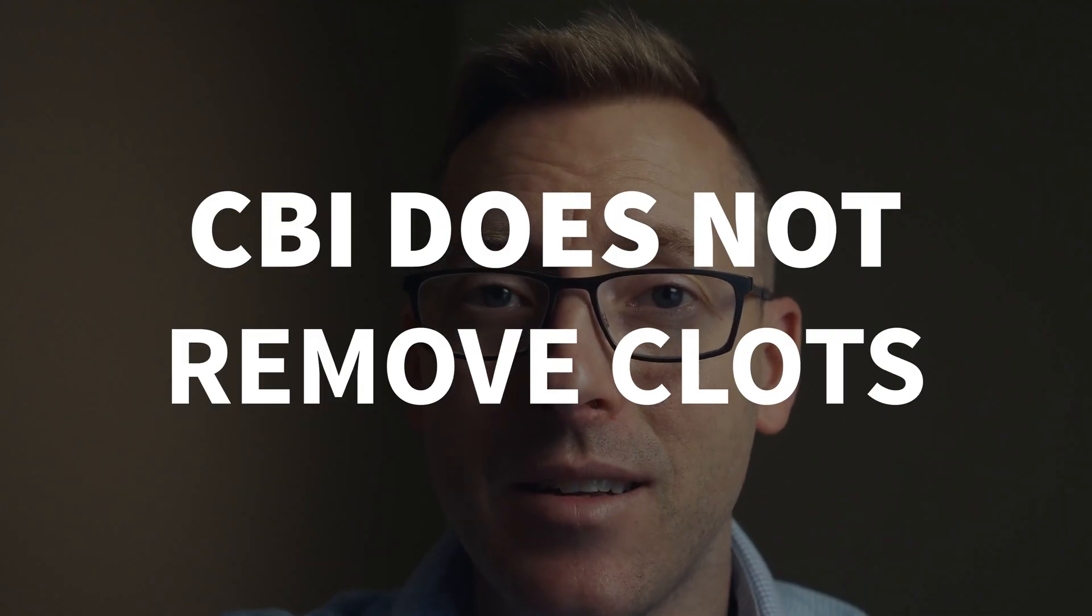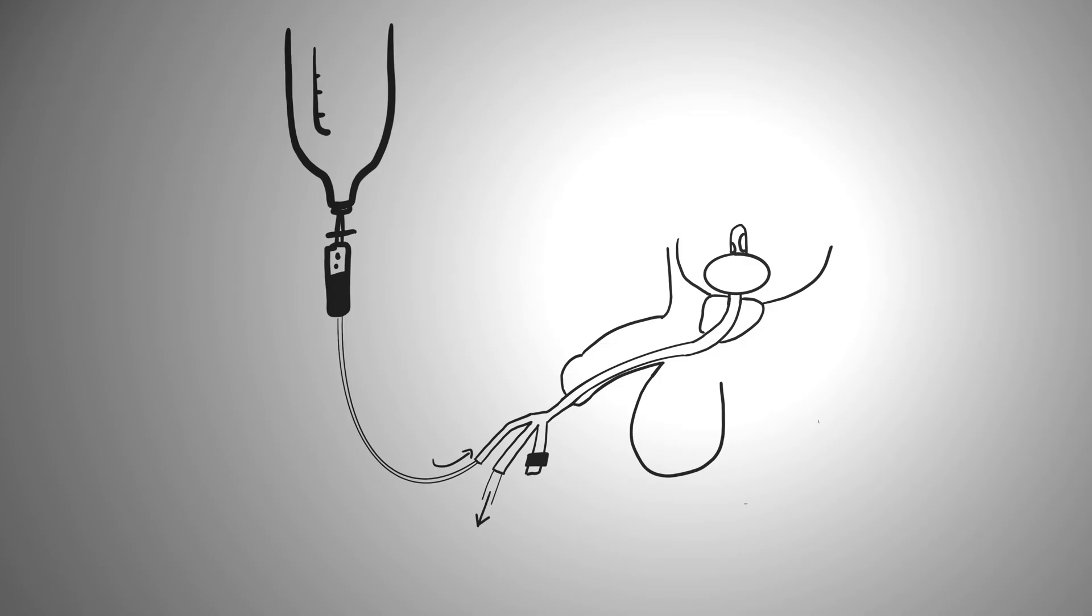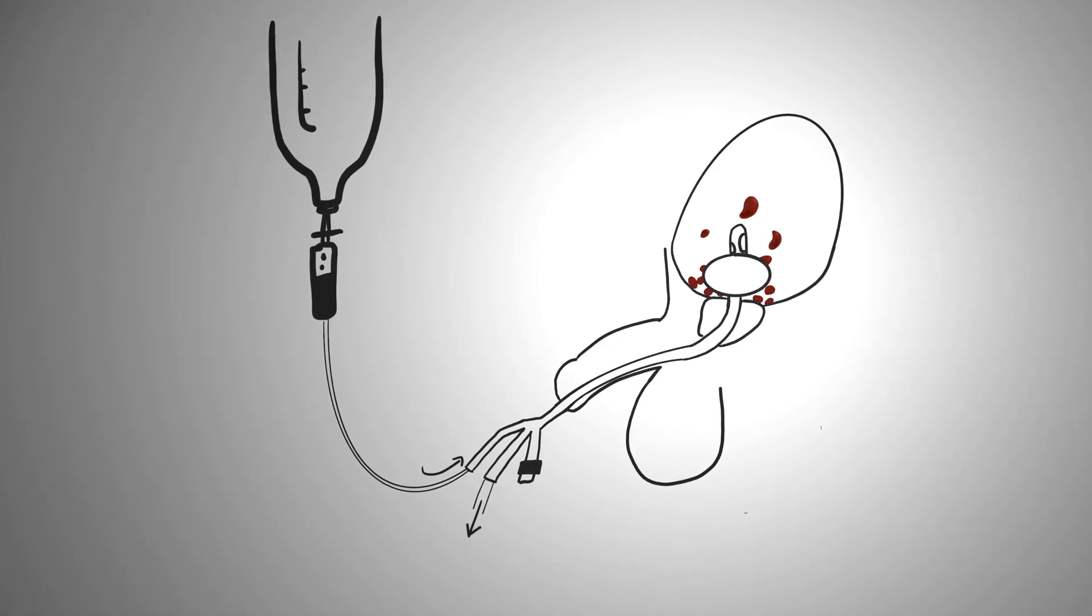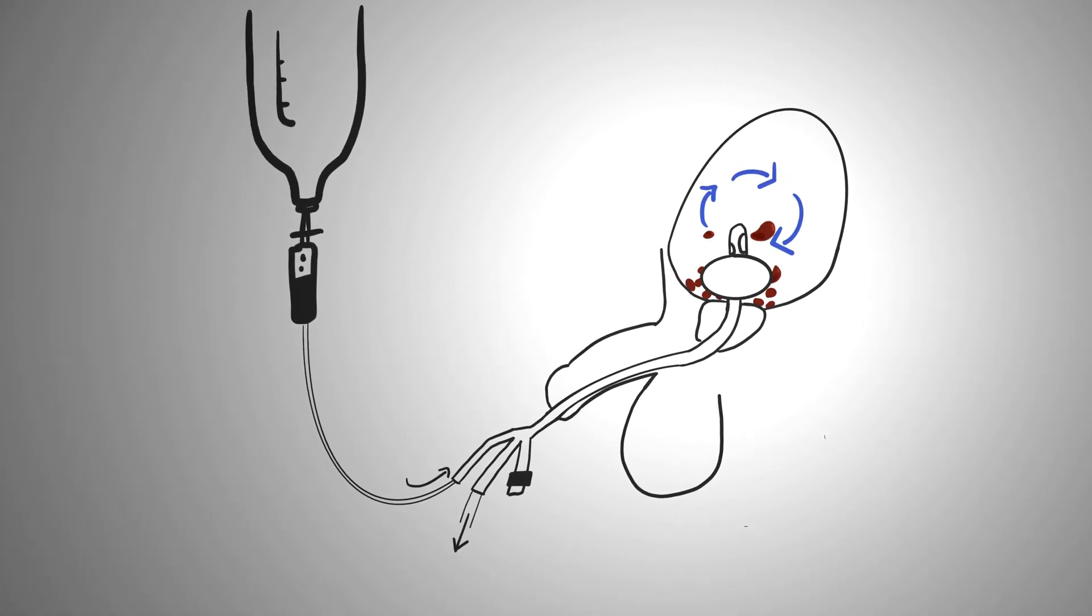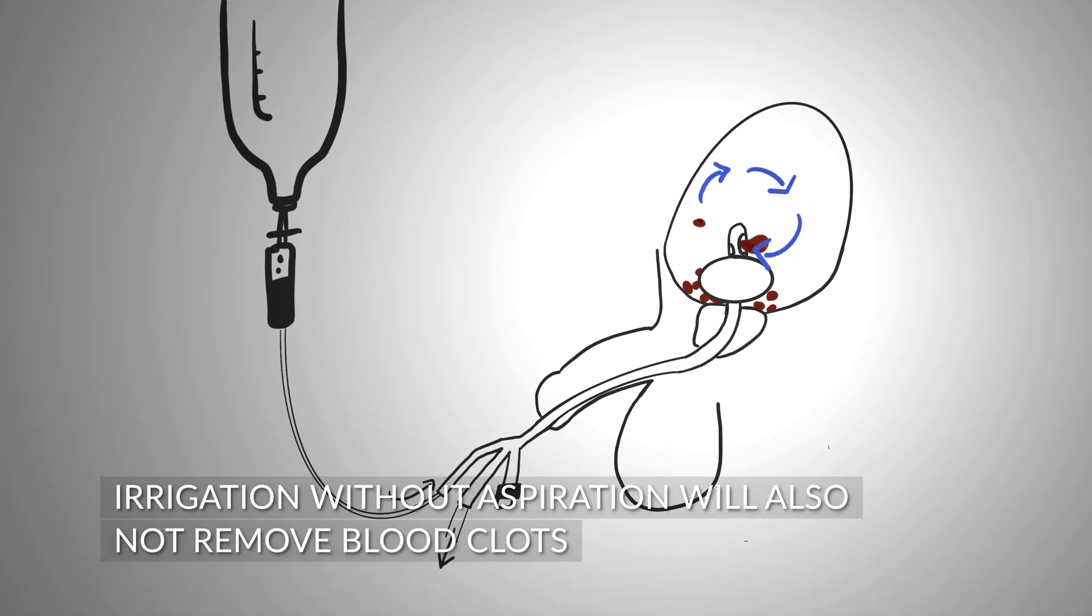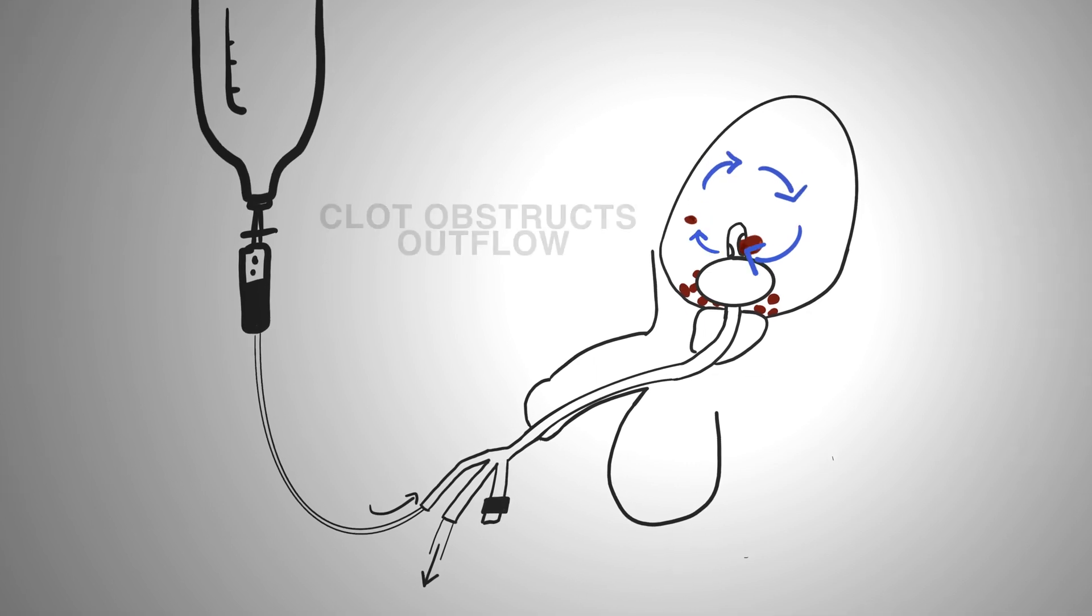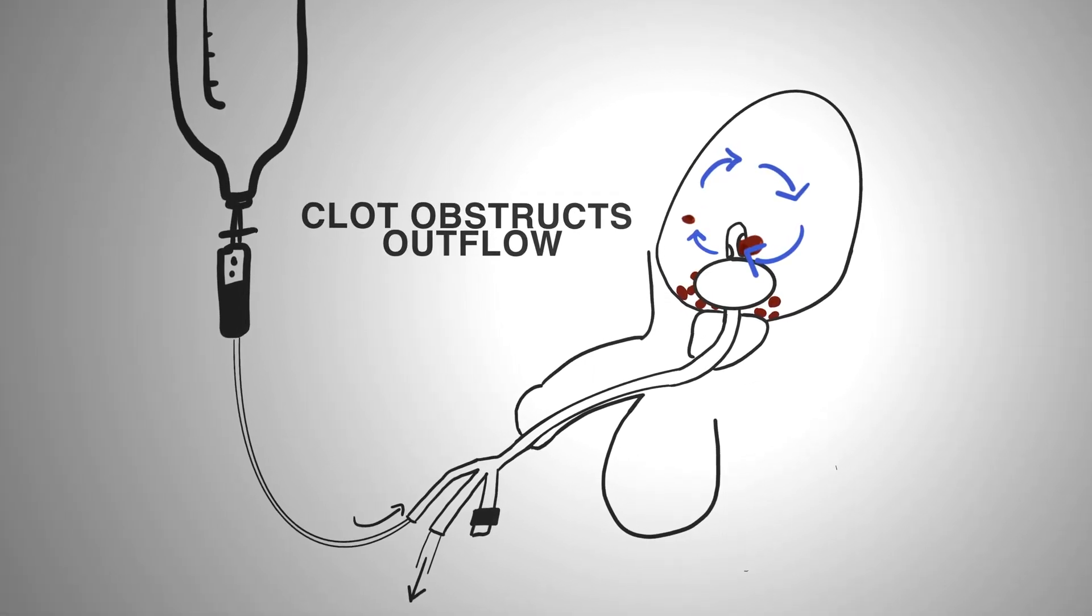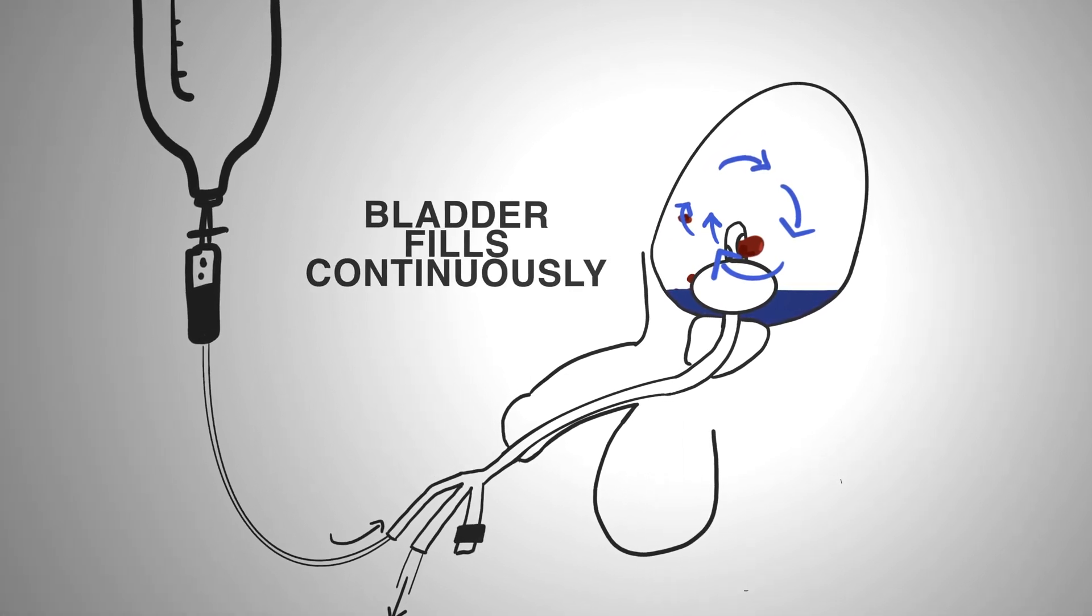It does not remove clots that are already in the bladder on its own. If there are clots already in the bladder, do not simply place a three-way Foley catheter and start irrigation. This will not remove the clots. It will only add fluid to the bladder at a constant rate. The inflow port will not get blocked if there are clots present. If a clot is present and moves, it will block the exit port. So what will happen is the bladder will fill up as fast as you're running irrigation.